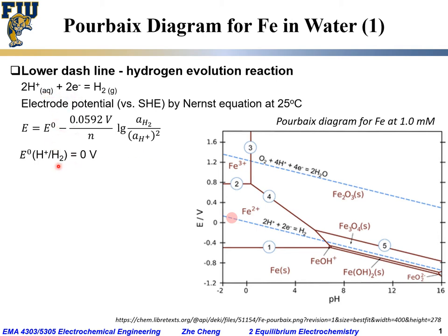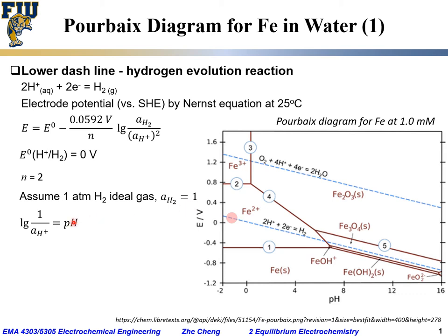Because this is evaluated versus SHE, the standard electrode potential for the proton/hydrogen gas pair is 0 volt. The number of electrons transferred N is 2. Assuming one atmosphere of ideal hydrogen gas, the activity of H2 is 1. The log of 1 over proton activity is by definition the pH.